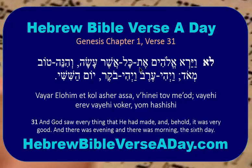So, 'and God saw everything that he had created.' V'hineh tov ma'od — 'and behold, it was great.' V'hineh is like 'hineh' in modern Hebrew. Tov — yeled tov is a good boy. Ma'od — tov ma'od is 'very good.' So anything ma'od means 'very.'